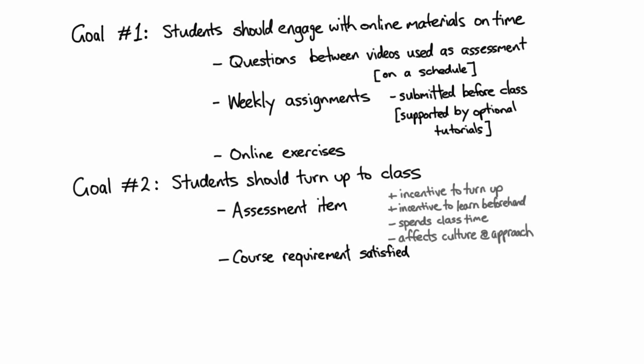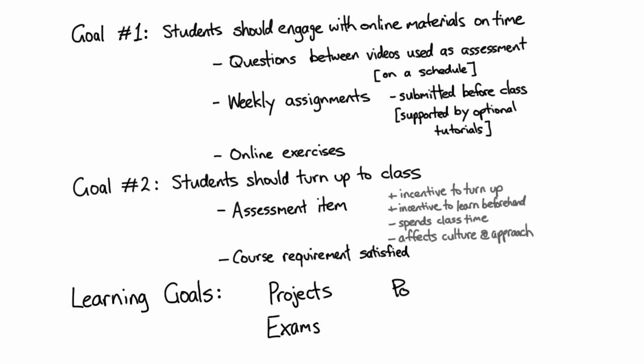Those two goals are essentially just to make sure students are engaging with your course properly. But naturally your course will have learning goals — particular tools, skills, and abilities you want students to have. For those, you have the normal range of assessment possibilities. The reason I bring this up is that exactly what you put in those assessment items creates pressure back on the choices you make for attendance and online engagement. You don't want to overly assess one skill set or overload students, so you need to design the assessment plan as one coherent entity.